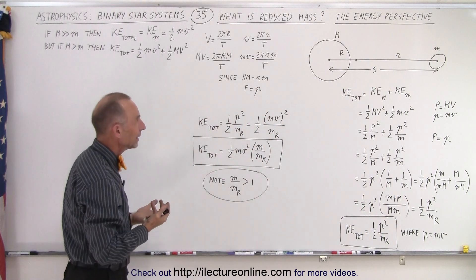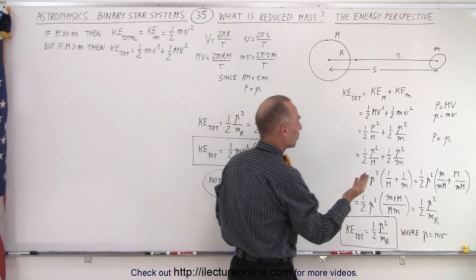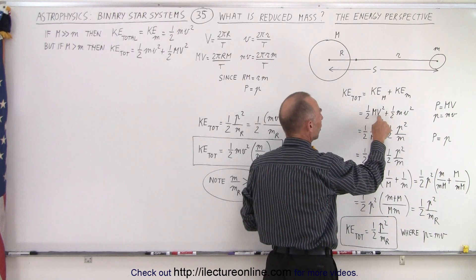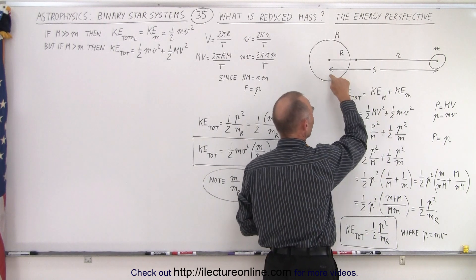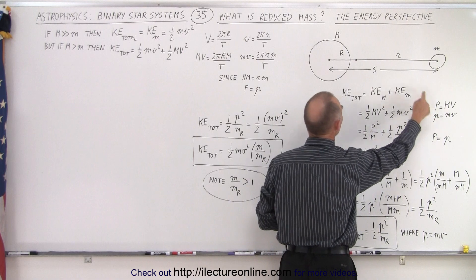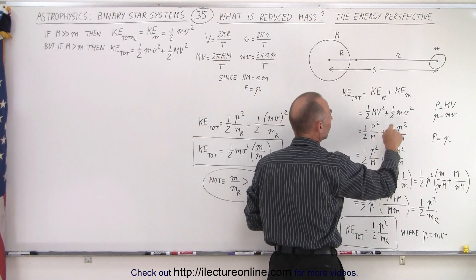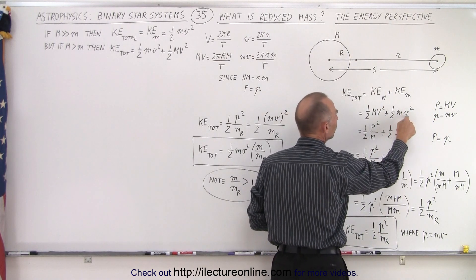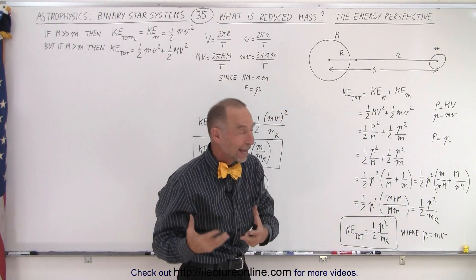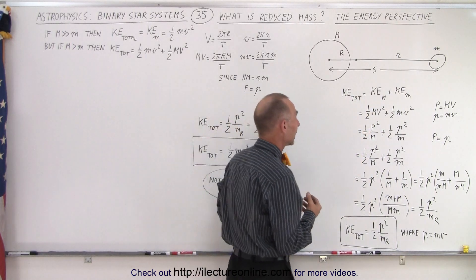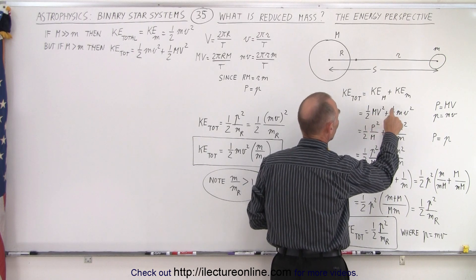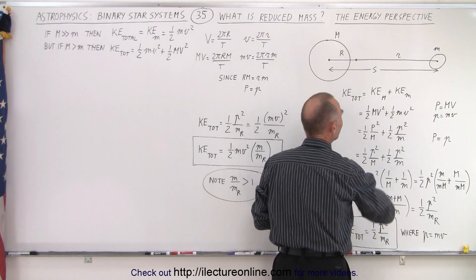So what we get is the following equation. Notice that we use large M and large V for the mass and velocity of the large mass, and large P for the momentum of the large mass, where small m, small v, and small p belong to the small mass. When we add the two kinetic energies we get ½MV² + ½mv².